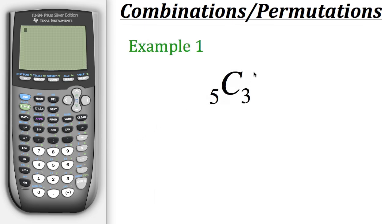So here we have a combination with a total of five items where we only want to choose three of them. Now when we put this into the calculator it's going to have a slightly different notation.